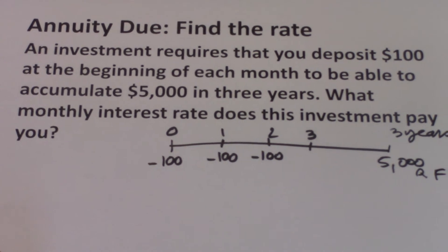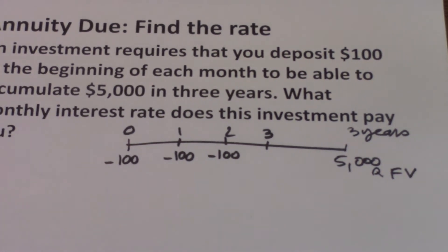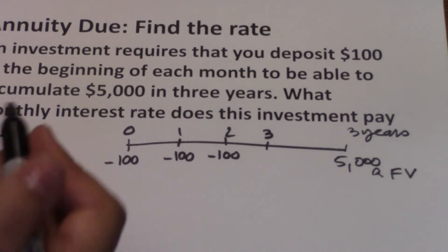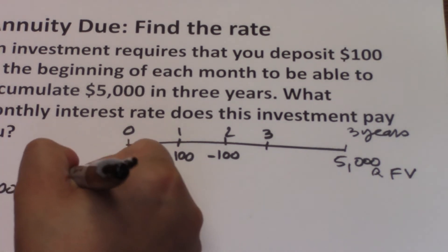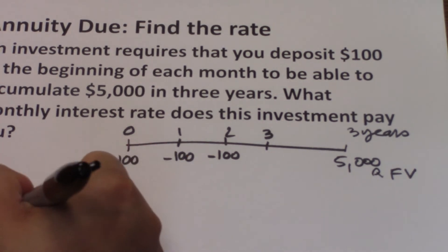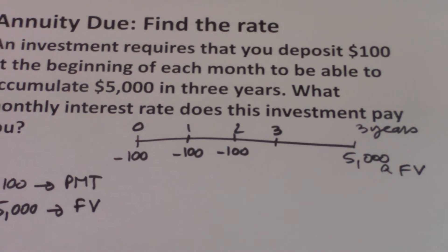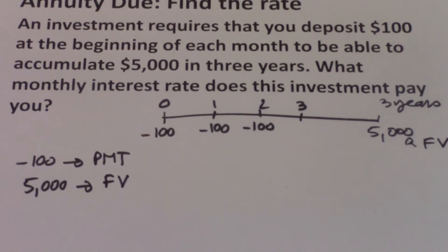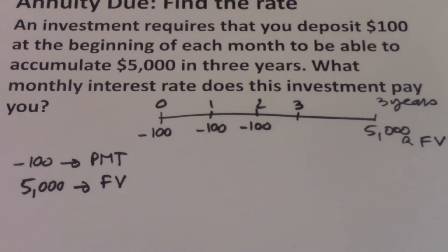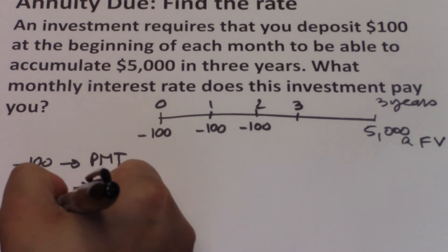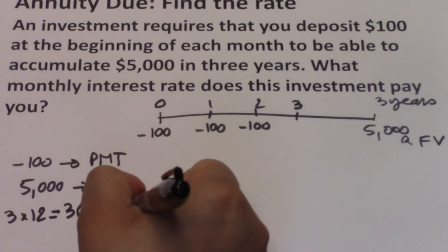The $100 deposits are our payments and should be inputted into the calculator as a negative number to represent them as a cash outflow. So negative $100 is your PMT and $5,000 is the future value. Since the PMT is made on a monthly level, N should also be inputted as a monthly number. We are investing for three years making monthly deposits, so we take 3 times 12, which equals 36 — that is our N.